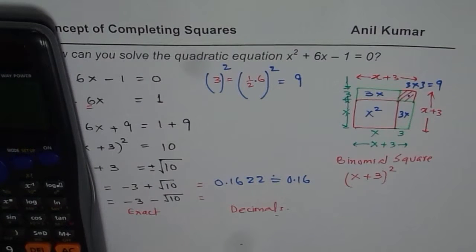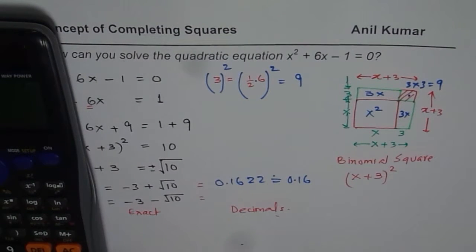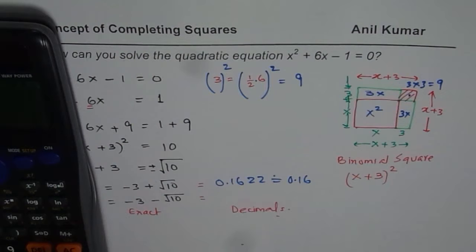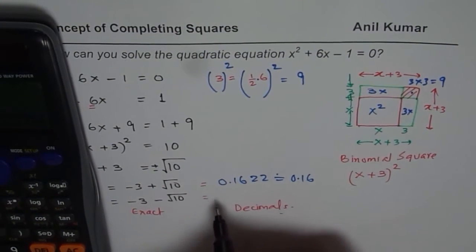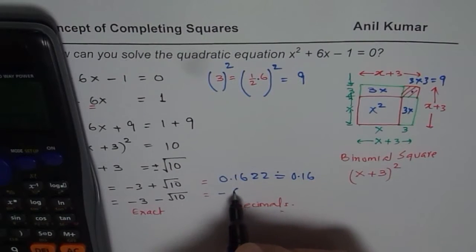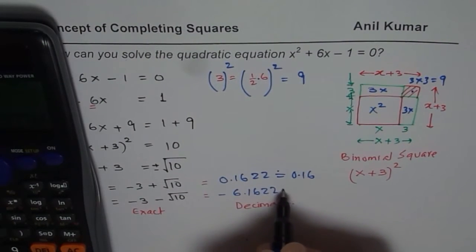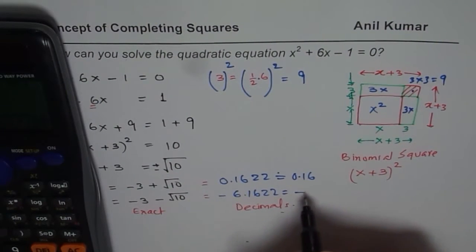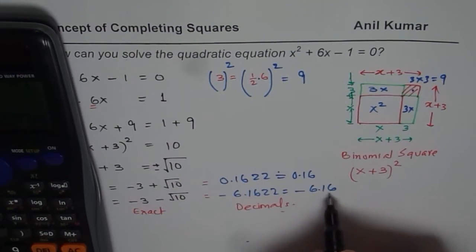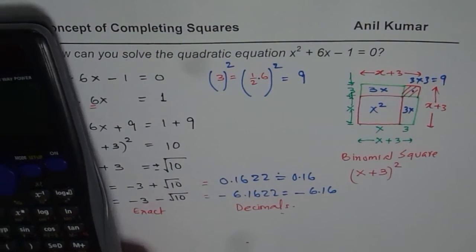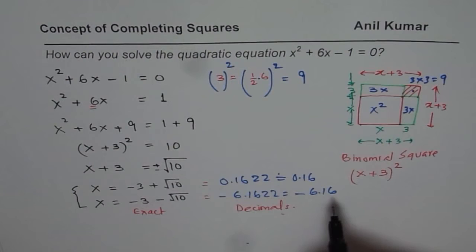Similarly, we can do minus square root of 10. And to this, we will say minus 3. So we will do minus 3 equals to, and with decimals, we get -6.1622, which could be written as -6.16. So these could be the answers correct to two decimal places.